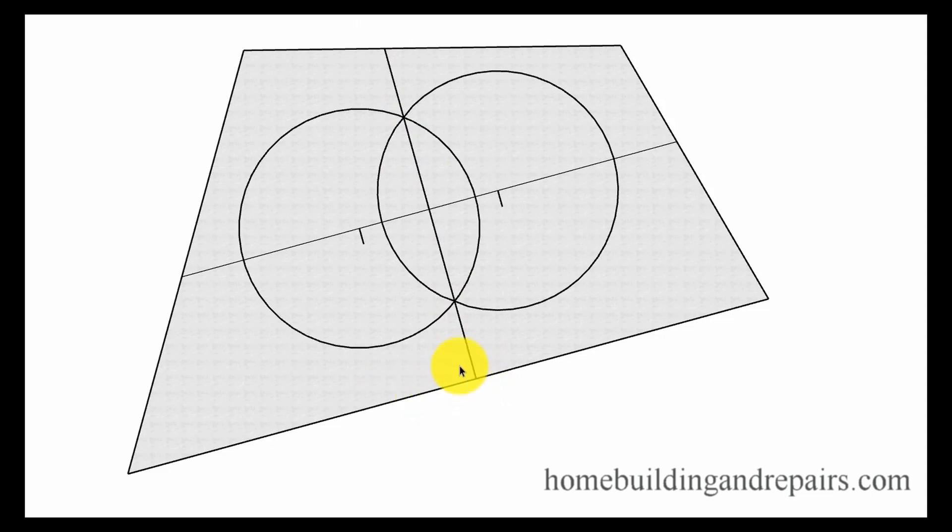So the first thing that you are going to do will be to draw a line. I've already drew this. This is the completed segment here, but you're going to draw a line and then you're going to create two points here. And these points can be anywhere along the line within reason. And then you will draw two circles the same size.